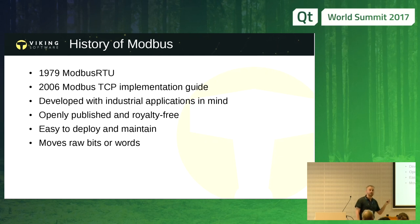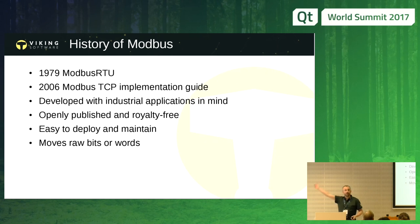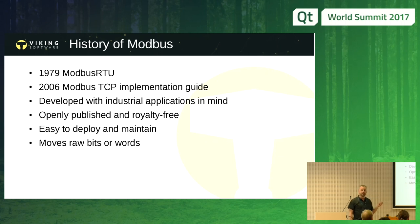A good way to think of Modbus is to think of it as remote memory mapping. You simply have access to the remote memory. The other end of your Modbus will store stuff in the memory you have access to read. And when you have something to say, you write it into that memory, and when the other end thinks it's a convenient time, it reads that memory. So there are no restrictions on what you can move. That was so awesome that in 2006, the first TCP implementation guide was published, and ever since we've been able to use Modbus over TCP.